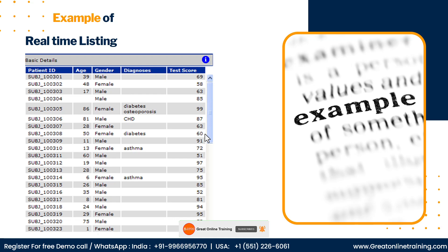If you have a patient's CRF form, you will get the data: age, gender, diagnosis, score, etc. You will capture that information. If you have a patient's data, you will have a listing. The difference between a table and a listing is that a listing gives you the total patient-level data.